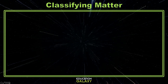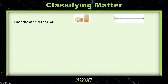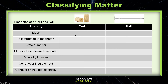Let's look at two example objects and describe the matter that they are made of as best we can. Here we see a cork made of wood and a nail made out of steel. Let's fill in the table together. The mass of a cork is about 1.2 grams, and the mass of a nail is about 10 grams. Are these objects attracted to magnets? The cork is not, but the nail is.